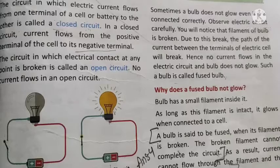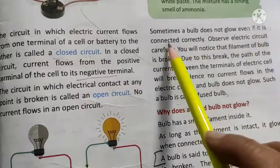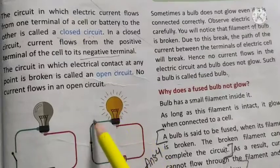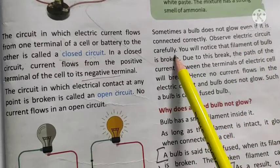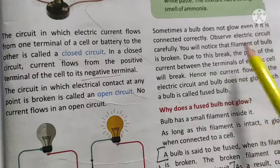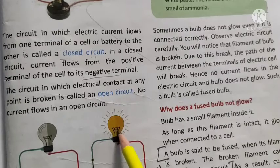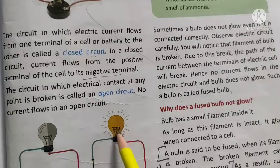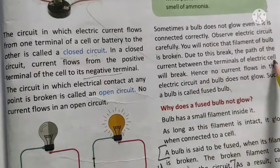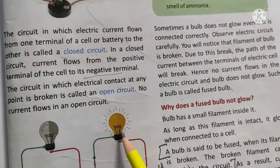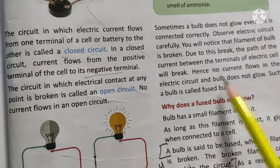Now it's clear what an open circuit and a closed circuit are. Sometimes a bulb does not glow even if it is connected correctly. This happens when the circuit appears complete but the bulb still doesn't glow. If you observe the electric circuit carefully, you will notice that the filament of the bulb is broken. The filament is the wire you see in the middle of the bulb. When you look closely, you'll find this filament is broken. Due to this break, the path of electric current between the terminals of the electric cell will break.